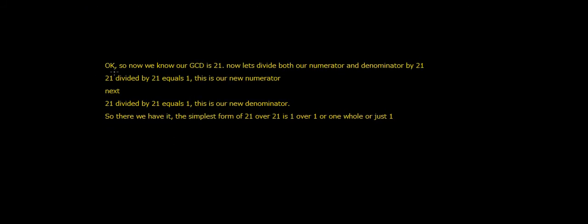So now we know our GCD is 21. Now let's divide both our numerator and denominator by 21. 21 divided by 21 equals 1 — this is our new numerator. Next, 21 divided by 21 equals 1 — this is our new denominator. So we have it: the simplest form of 21 over 21 is 1 over 1, or 1 whole, or just 1.